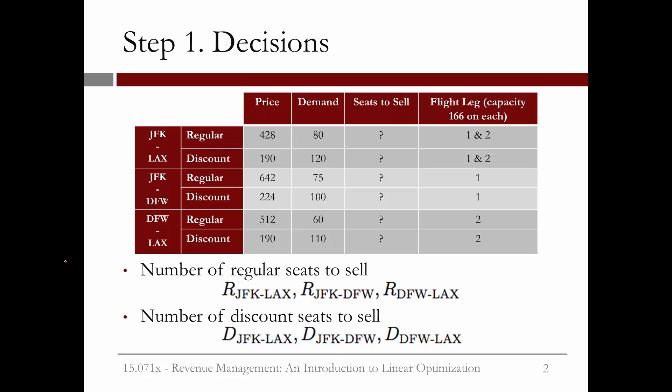So how does our optimization problem change? We now have six types of seats that we can offer: the original two types, regular and discount from New York to LA, and four new types. We can sell both regular and discount seats from New York to Dallas, and regular and discount seats from Dallas to Los Angeles. We know the price of each type of ticket, as well as the forecasted demand for each type of ticket.